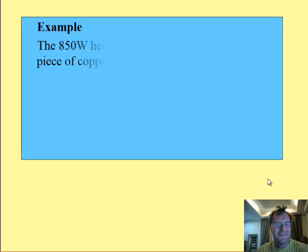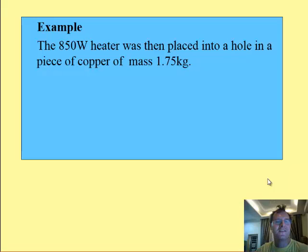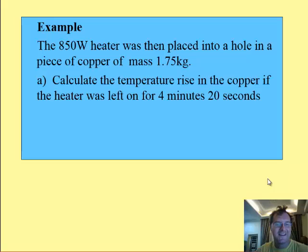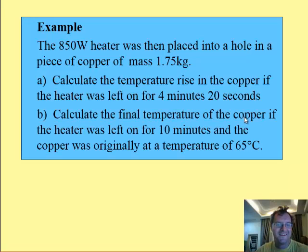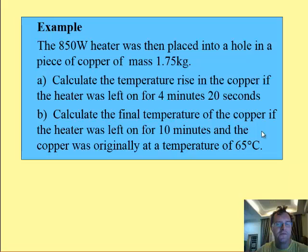Here's an example question. An 850 watt heater is placed into a hole in a piece of copper of mass 1.75 kilograms. Calculate the temperature rise in the copper if the heater is left for 4 minutes and 20 seconds. Also calculate the final temperature of the copper if the heater was left on for 10 minutes and the copper was originally at 65 degrees centigrade. So two questions here — pause and think how you calculate them.